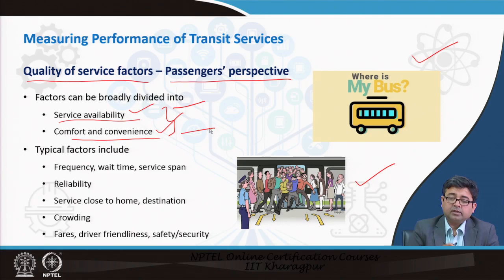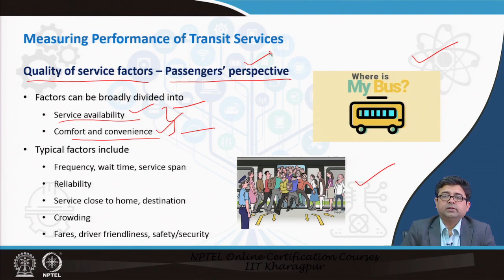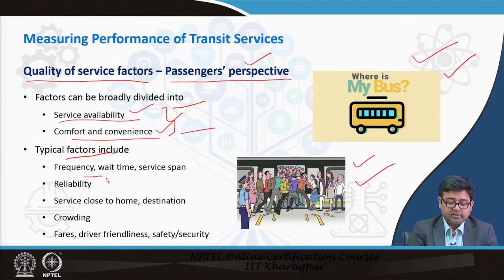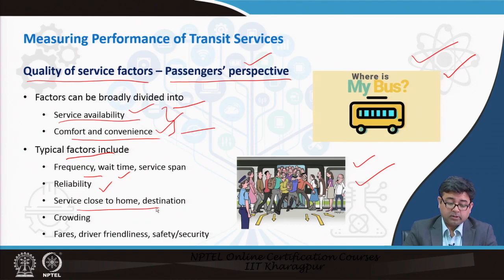If you include parameters that judge service availability and also judge comfort and convenience, you can determine the quality of service from the passenger's perspective and evaluate the public transportation system's performance. A system is performing well from the user's point of view if it has less crowding or high frequency so all passengers can avail of it. Typical parameters include frequency, wait time, reliability, proximity of service to home or destination, crowding, fare, and driver behavior and friendliness.